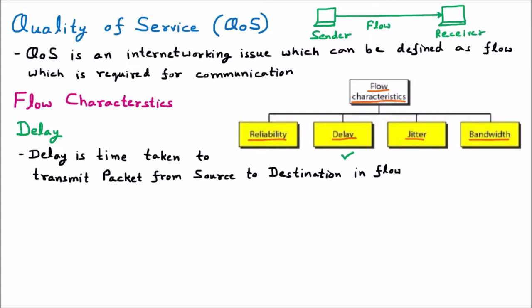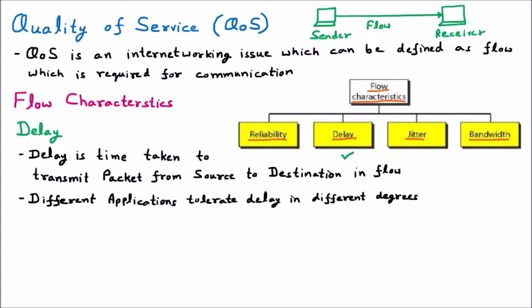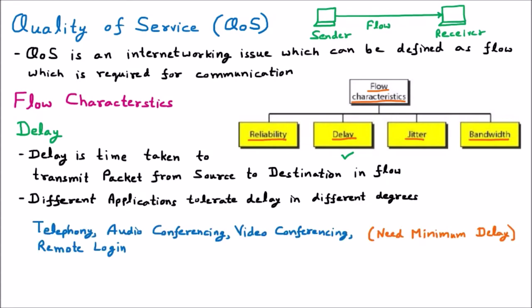Different applications tolerate delay in different degrees. It is not that every application wants minimum delay. We know delay should be minimum overall, but many applications say some delay is not a problem. For telephony, audio conferencing, video conferencing, or remote login, they need minimum delay. For example, in video conferencing, if my video reaches my friend after 5 minutes, that is not proper video conferencing — delay means the transmission time should be minimum.